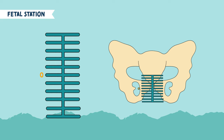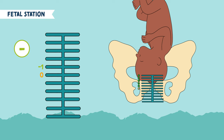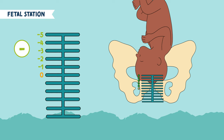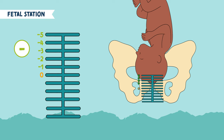Anything above fetal station zero is going to be negative numbers. So right above zero, you have negative one, negative two, negative three, negative four, and negative five. Negative one means that you are one centimeter above the ischial spine. Negative two means that you are two centimeters above the ischial spine, and so on.